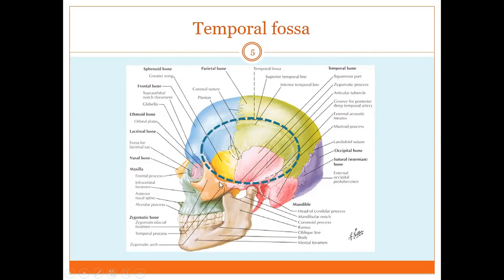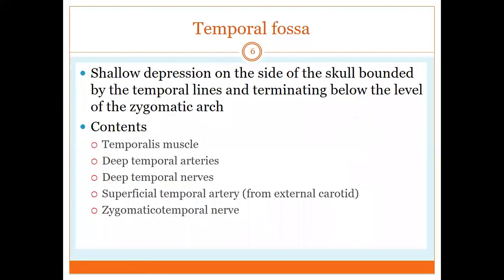The inferior boundary of the temporal fossa is the zygomatic arch — specifically the superior border of the zygomatic arch. The zygomatic process of the temporal bone continues into the supramastoid crest, which continues into the superior and inferior temporal lines. The superior temporal line forms the superior boundary of the temporal fossa, and anteriorly the temporal lines continue into the zygomatic process of the frontal bone, which continues into the frontal process of the zygomatic bone — completing a full oval.